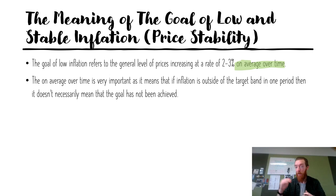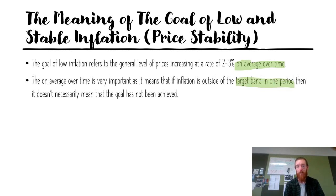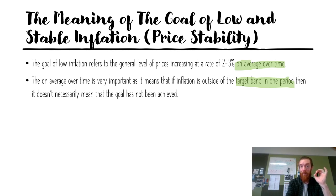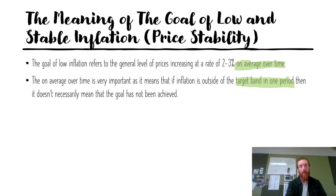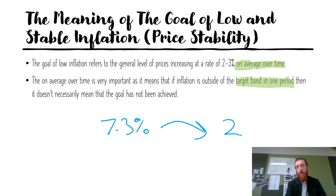Obviously we don't want extreme swings because we want inflation to be stable, but this means that if inflation is outside the target band in one period, it doesn't necessarily mean the goal is not being achieved. It's also true that if inflation is in the band for one period, it doesn't mean we're achieving it if we've been well beyond it for a while. For example, we're currently at 7.3% when I'm recording this — if next period we drop to 2.1%, that doesn't mean the goal is being achieved, because that's a wild swing.